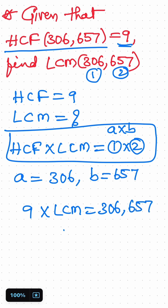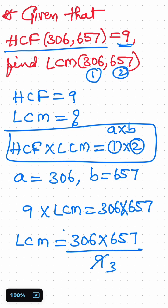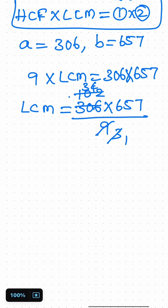So what is the LCM? LCM equal to product of two numbers, 306 multiply with 657, divided with 9. 3 threes are 9, 3 ones are 3, 2s are 6, okay 3 ones are 3. 3 threes are 9, 3 fours are 12. Here 657 is multiplied with 34, that is the LCM.